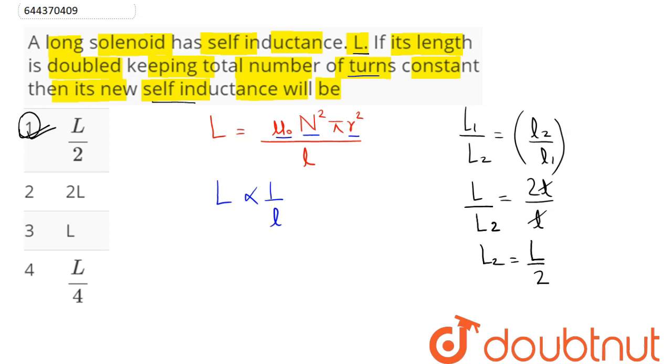So we can say here the new self-inductance is L by 2. Hence, option number 1 is the correct answer. That is, L by 2 is the new self-inductance. Hence, what is our answer?